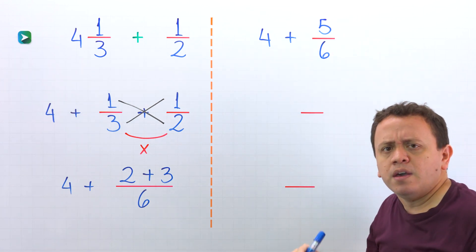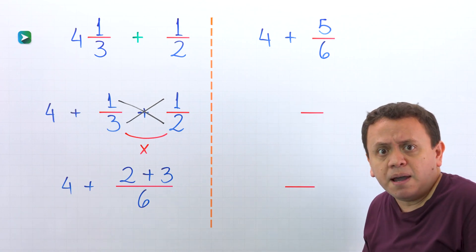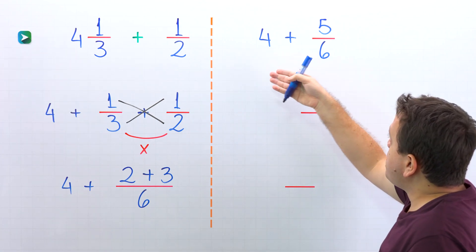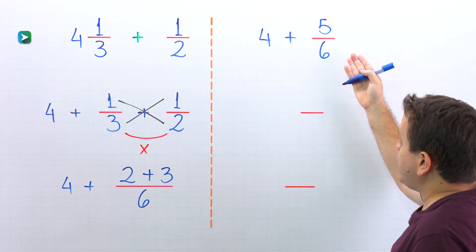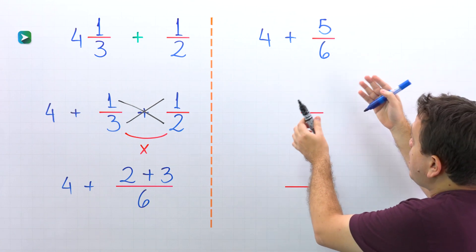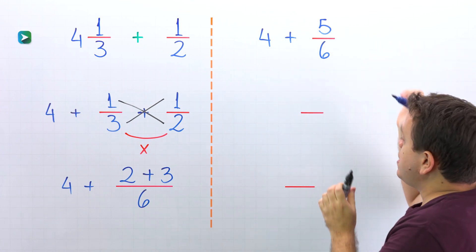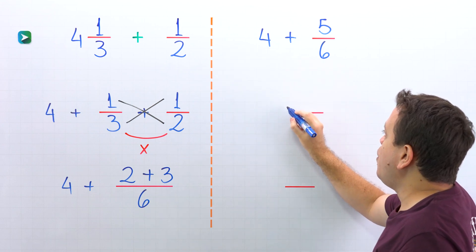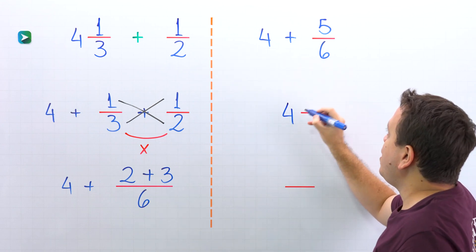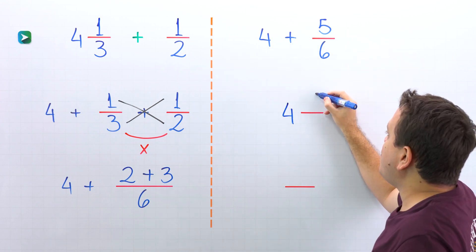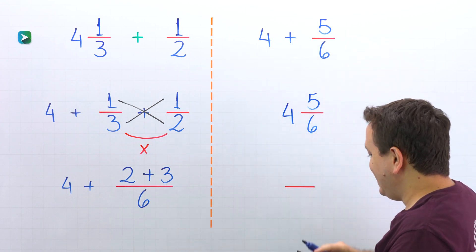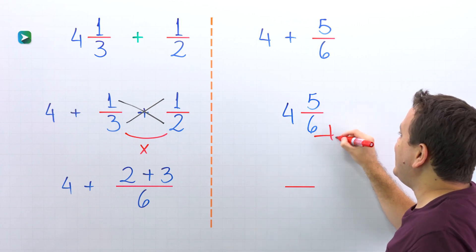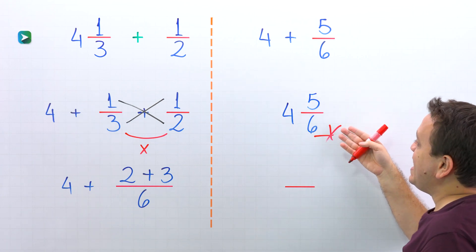Wait a second — that is the definition of a mixed number! Yes, a mixed number is the sum of a whole number and a proper fraction. So we can rewrite this expression as a mixed number: 4 and 5 sixths. That's it! Here we have the final answer: 4 and 5 sixths.